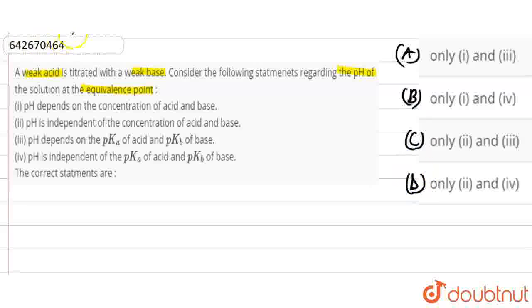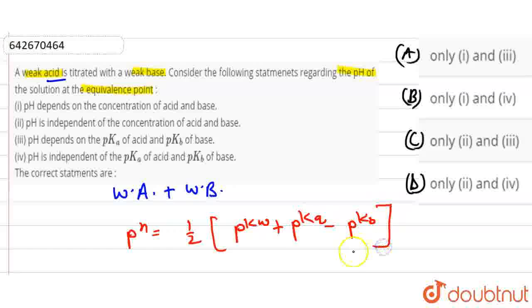So, first of all, we have a weak acid and we have a weak base. The pH formula at equivalence point is half of PKW plus PKA minus PKB.